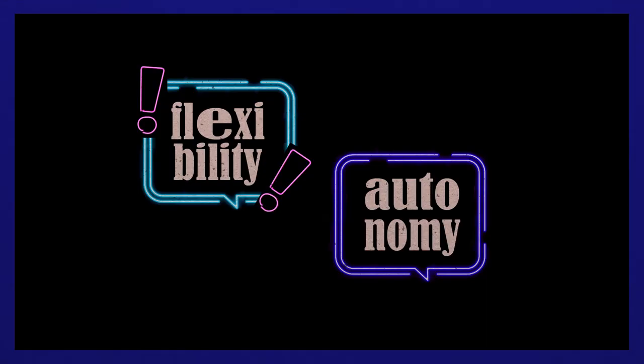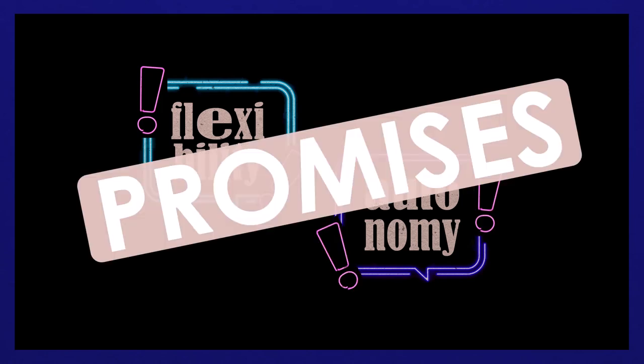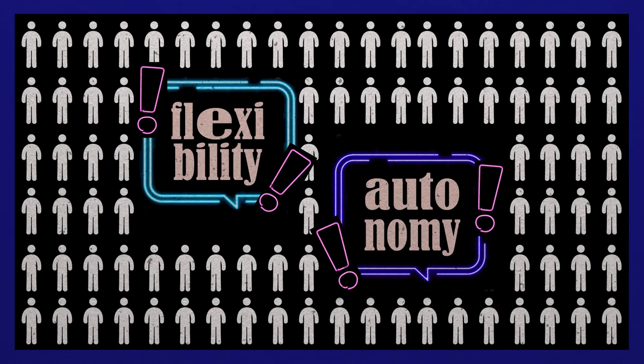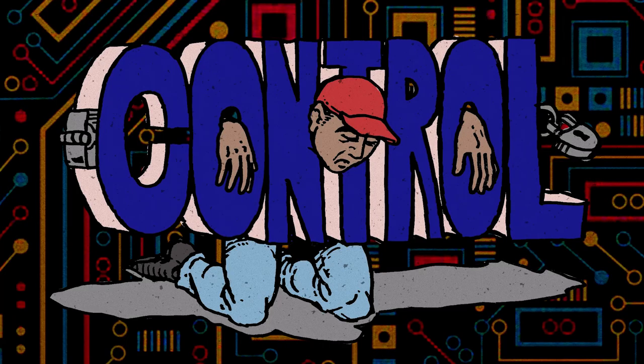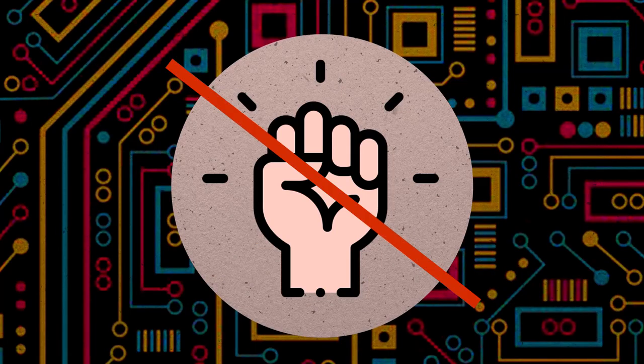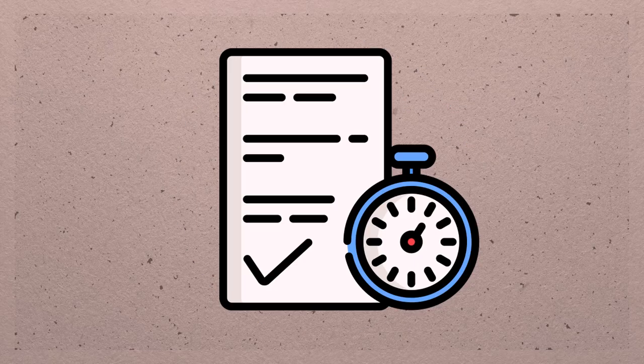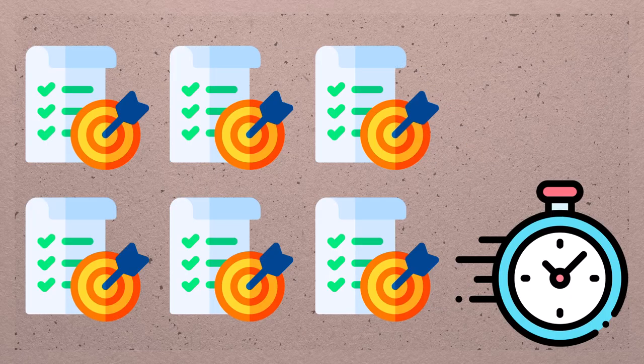Problems arise when digital platforms make promises of flexibility and autonomy to recruit workers, but their algorithmic management is used to exercise control, reduce workers' autonomy, encourage workers to take up more tasks and to complete them more quickly.